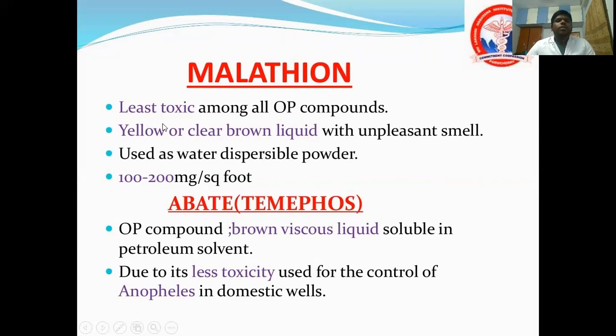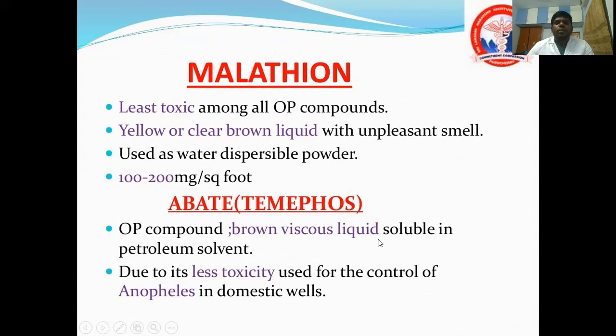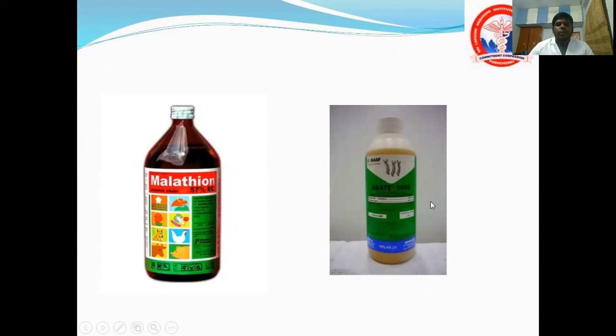Malathion is the least toxic organophosphorus compound — a clear brown liquid with an unpleasant smell. It is used as a water-dispersible powder at 100–200 mg per square foot. Abate is another organophosphorus compound commonly used today. It is a brown oily liquid soluble in petroleum solvent, with low toxicity, and is used for the control of Anopheles larvae.